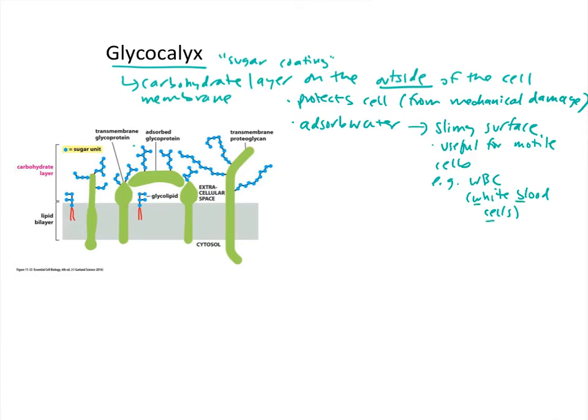One of the roles of white blood cells is to be a protectorate and respond to immune stimulation. White blood cells sometimes have to squeeze through really narrow spaces, and they can actually use the glycocalyx as a way to lubricate that.